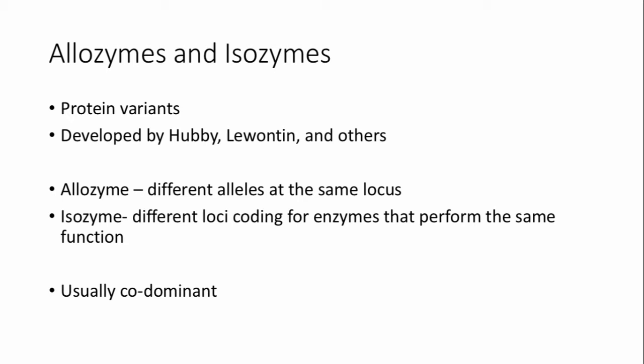These are protein variants, and they differ by size and charge. We call allozymes and isozymes sometimes the same thing. Allozymes is technically different alleles of the same locus. That means there's one position in the genome where that protein is coded, but there are multiple alleles of different size.